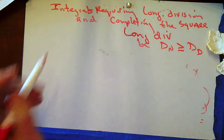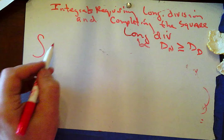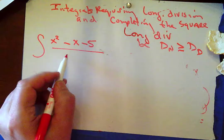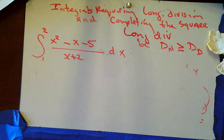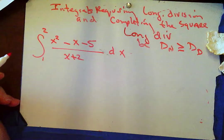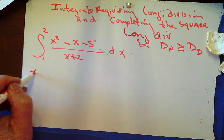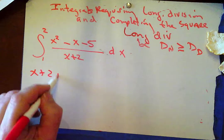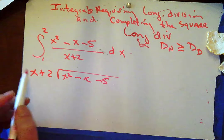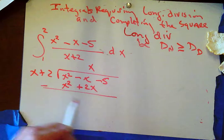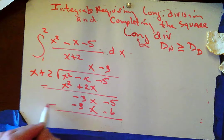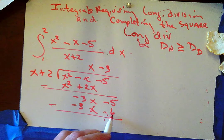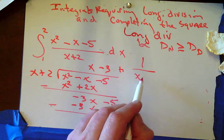Now it's your turn. How about the integral of x squared minus x minus 5 over x plus 2? Let's make this a bounded integral. Welcome back. I hope you thought: the degree on top is greater than or equal to the degree on the bottom, so I need to do long division. Multiplying by x gives x squared plus 2x, then subtracting yields negative 3x minus 5. Then multiplying by negative 3 gives negative 3x minus 6, and subtracting — remember minus a minus is a plus — gives a remainder of 1.